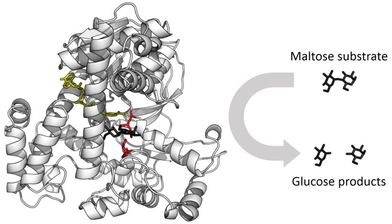Enzymes are generally globular proteins, acting alone or in larger complexes. The sequence of the amino acids specifies the structure which in turn determines the catalytic activity of the enzyme. Although structure determines function, a novel enzymatic activity cannot yet be predicted from structure alone. Enzyme structures unfold when heated or exposed to chemical denaturants, and this disruption to the structure typically causes a loss of activity. Enzyme denaturation is normally linked to temperatures above a species' normal level. As a result, enzymes from bacteria living in volcanic environments such as hot springs are prized by industrial users for their ability to function at high temperatures, allowing enzyme-catalyzed reactions to be operated at a very high rate.